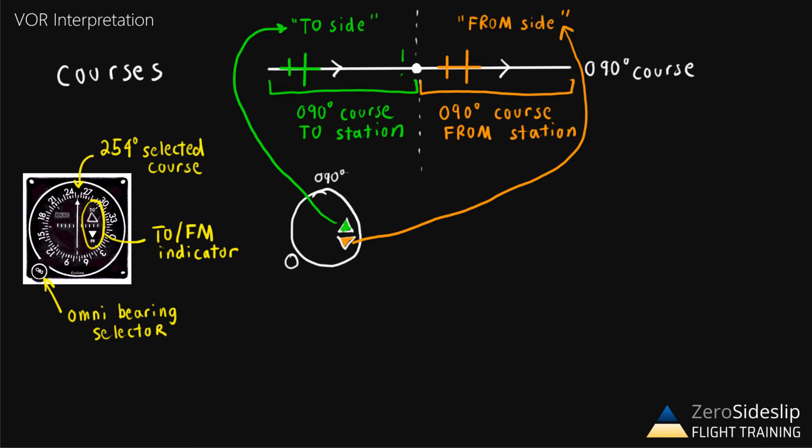So what this effectively does is narrows down the location of the airplane into two out of the four quadrants. If we label these quadrants one, two, three, and four, we see that the to from indicator tells us which two out of the four quadrants we could be in. Meaning if we're on the to side, we're in either quadrants one or two. If we're on the from side, we're in either quadrants three or four.